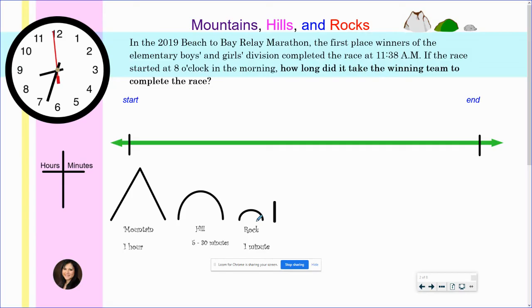Let's take a look at this word problem. In the 2019 Beach to Bay Relay Marathon, the first place winners of the Elementary Boys and Girls Division completed the race at 11:38 AM. If the race started at 8 o'clock in the morning, how long did it take the winning team to complete the race?